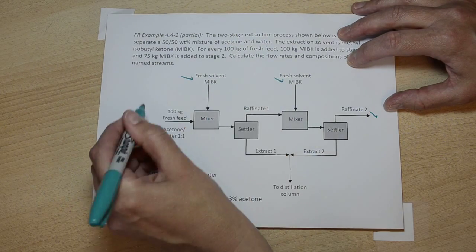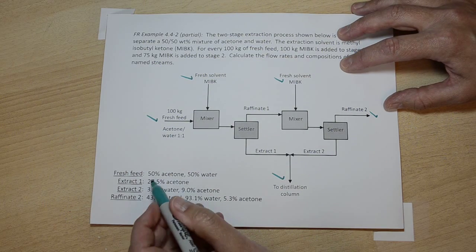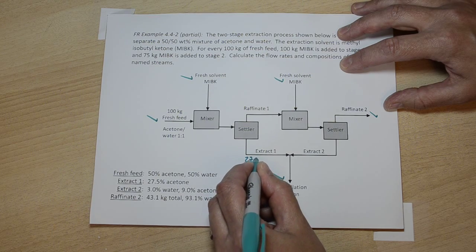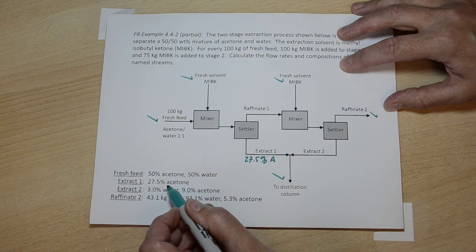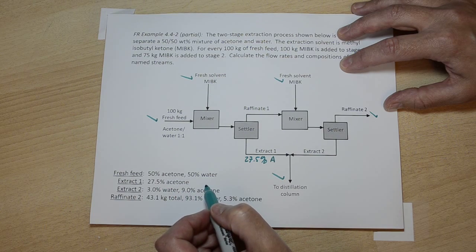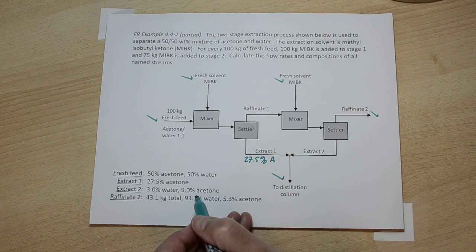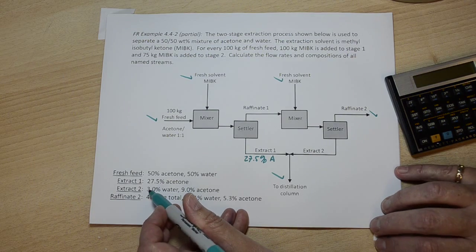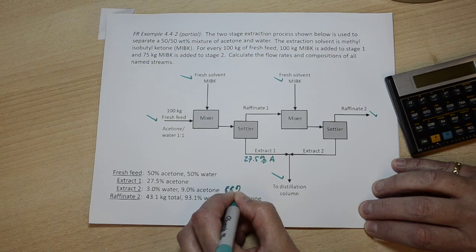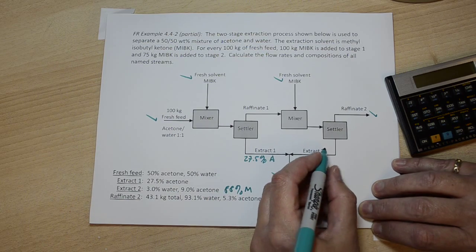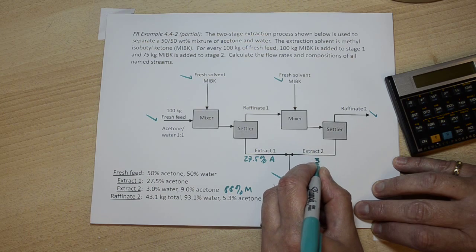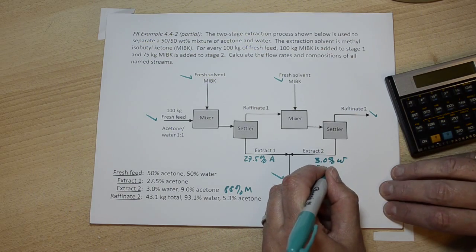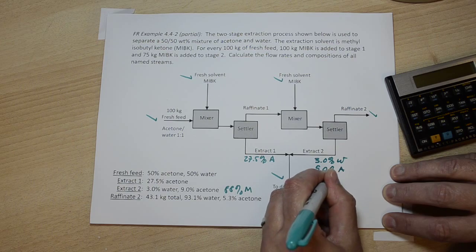We have all these outside streams. In the Extract 1 stream we know the composition of acetone, but we don't know the composition of water or MIBK. In Extract 2 we know two out of three, so we can figure out the third one: 9, 10, 11, 12 — it must be 88% MIBK. So we know the complete composition of that phase: 3.0% water, 9.0% acetone, and 88% MIBK.